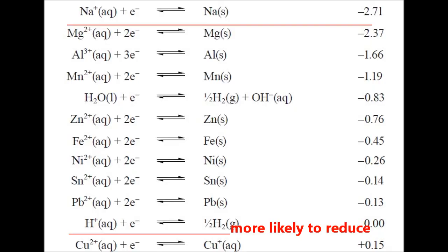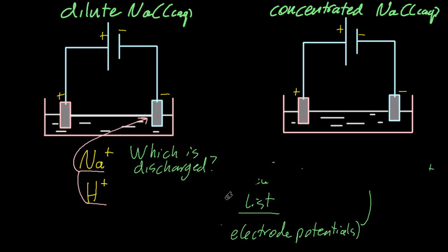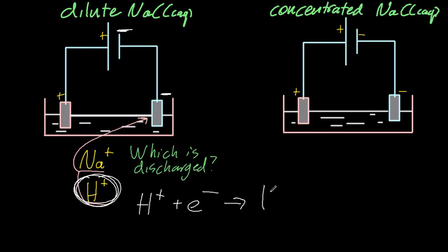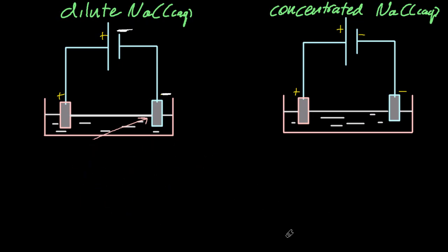Here's the list. The lowest on the list — the one with the highest standard electrode potential — is hydrogen. So hydrogen is produced at the negative electrode. It picks up an electron from the negative electrode to make H₂. The negative electrode is full of electrons, and hydrogen picks them up from there.